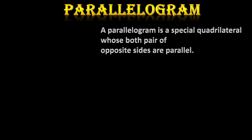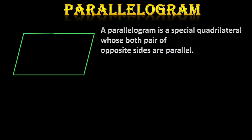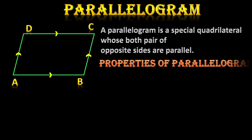What is a parallelogram? It is a special quadrilateral whose both pairs of opposite sides are parallel. In a trapezium only one pair of opposite sides are parallel, but in a parallelogram both pairs of opposite sides are parallel. Here ABCD is a quadrilateral where AB is parallel to CD and AD is parallel to BC, so it is called a parallelogram.